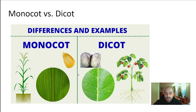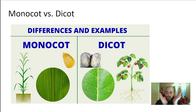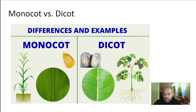And a dicot? Everything is basically the opposite. Dicots have two cotyledon leaves, so when they sprout they come up with two leaves. They have branched veins in their leaves, and they have a taproot system — one single root that goes deep down with many smaller roots branching off of it.